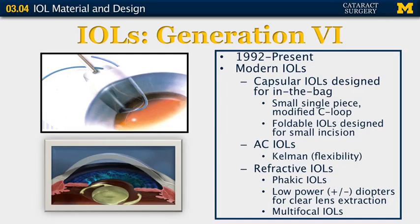Finally, we get up into the sixth generation, or what are considered the modern currently in-use lenses. These were first developed and introduced around 1992, and these lenses are designed for placement into the capsular bag. We have small single-piece lenses and lenses with three-piece design, meaning that the haptic and the optic are made of different materials. These lenses can now be foldable and placed through smaller incisions into the capsular bag. We're still using the Kalman very flexible open haptic anterior chamber lenses, which are still in widespread use when indicated. And we also have different options with refractive lens implants available.